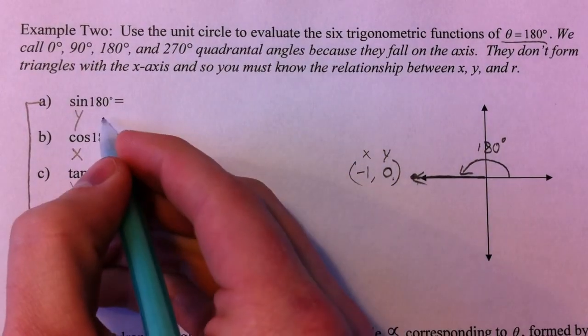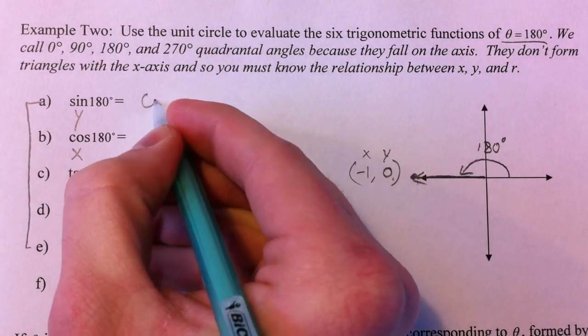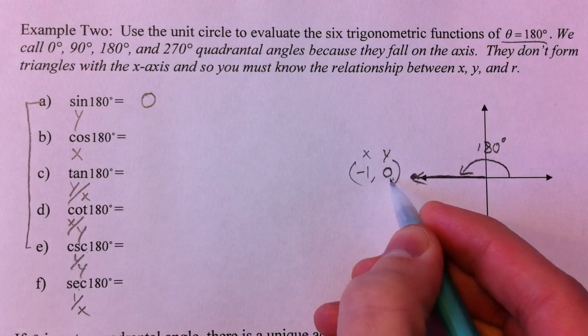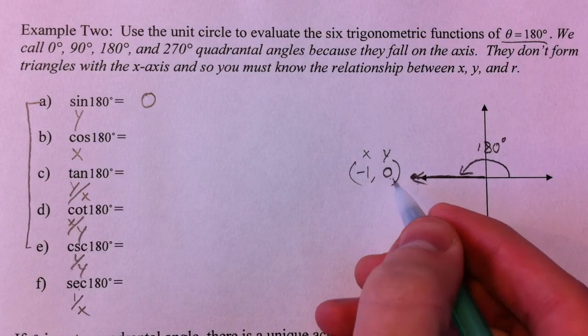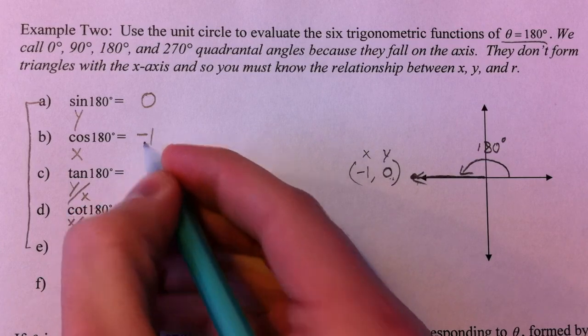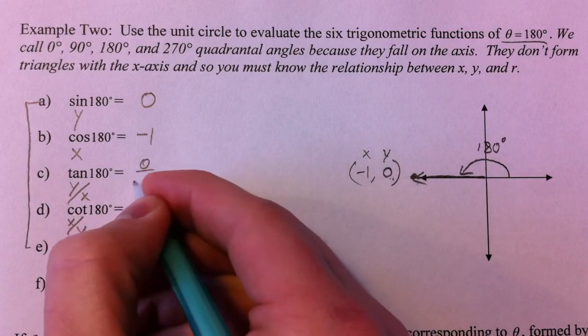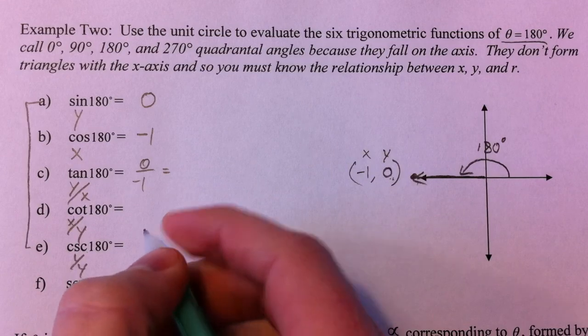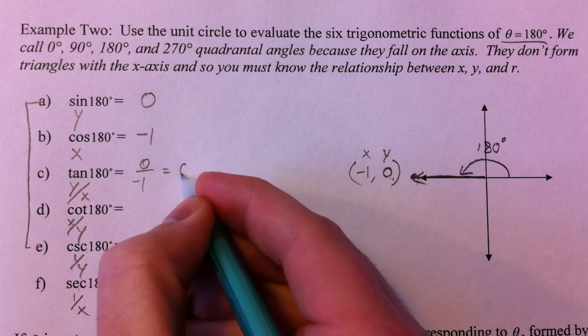So the sine value, the y-value, is just 0 in this case. So the sine of 180 is 0. Cosine is negative 1. And 0 divided by negative 1, you don't have anything to begin with, you're not going to have anything.